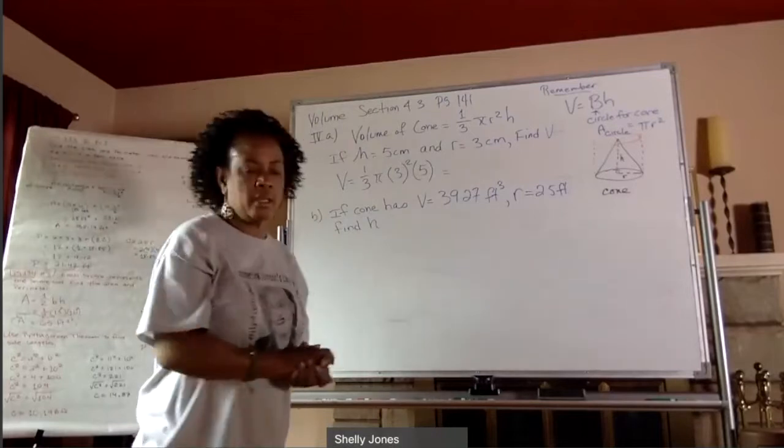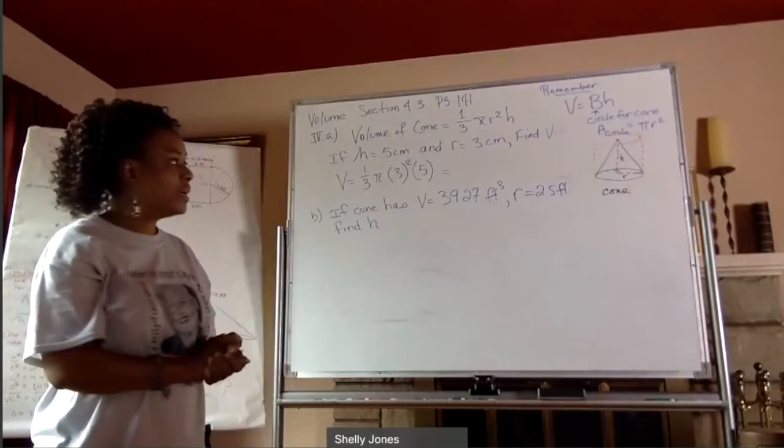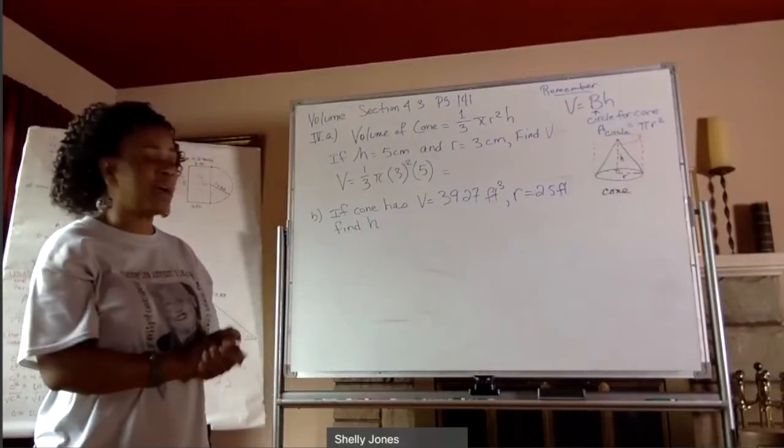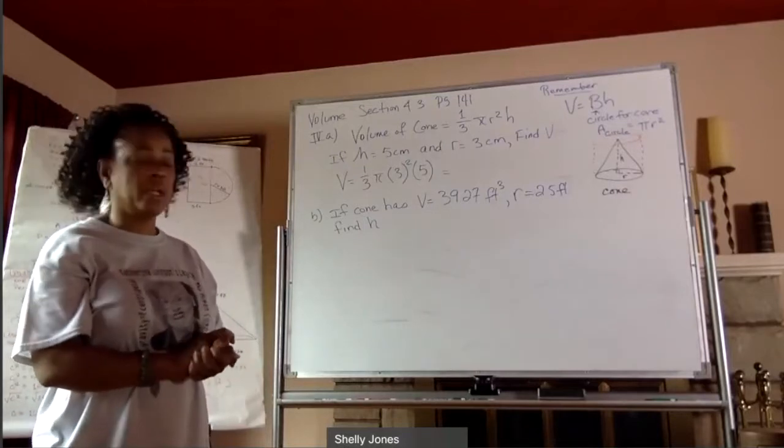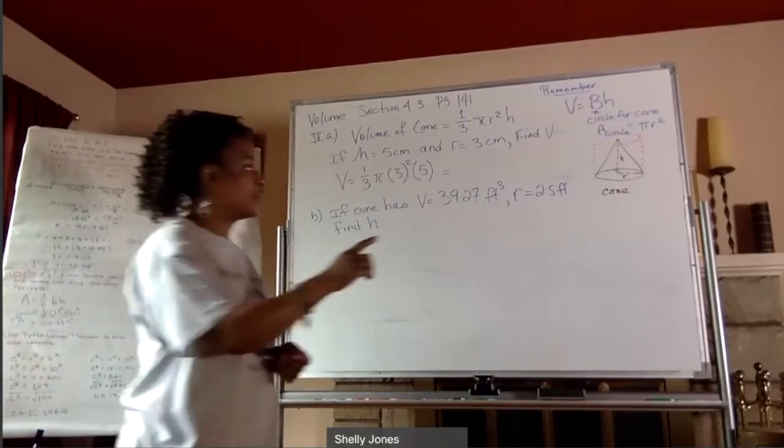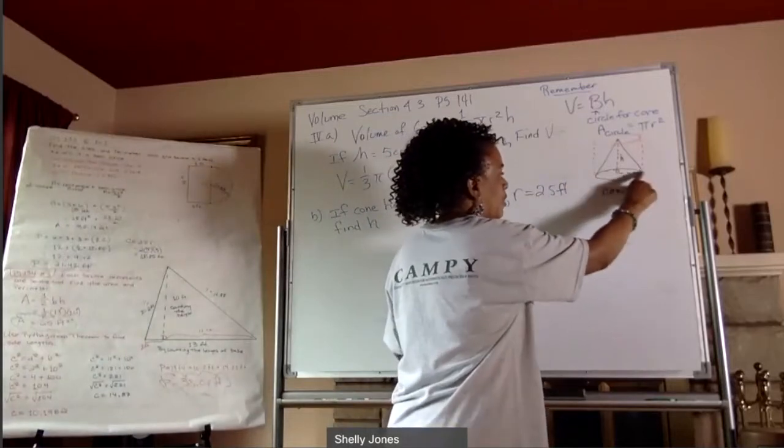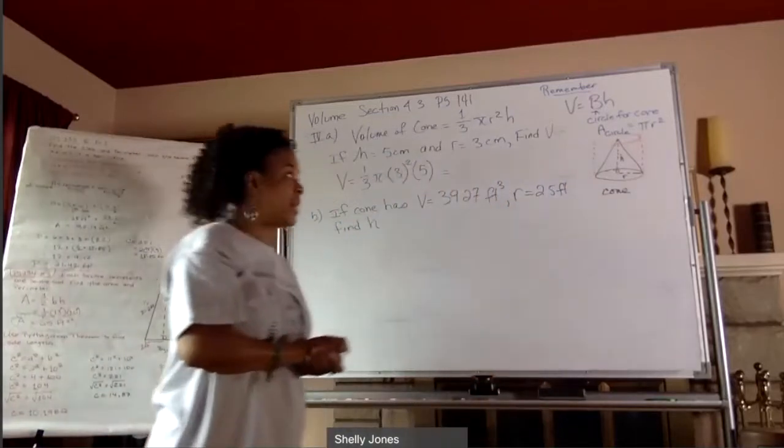All right, so this one's quite easy because we have everything we need here to find the volume. We have the height, which is five centimeters. And we have the radius, which is the radius from the center of that base over to the edge of the circle. And that is five.